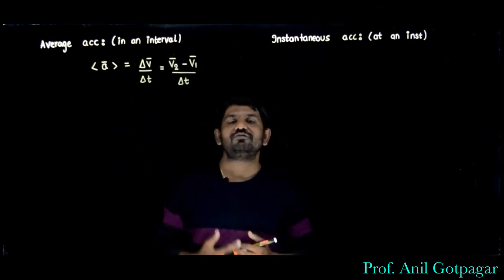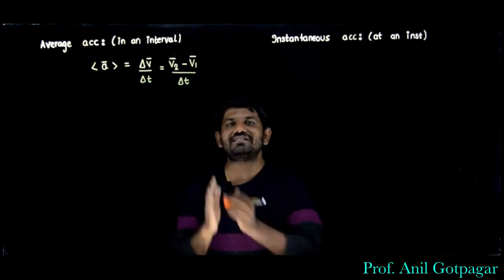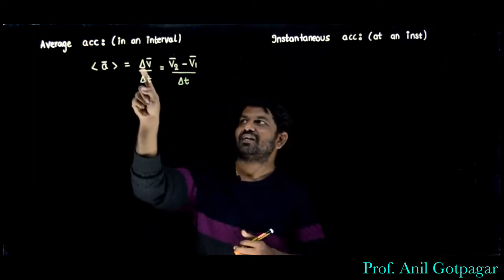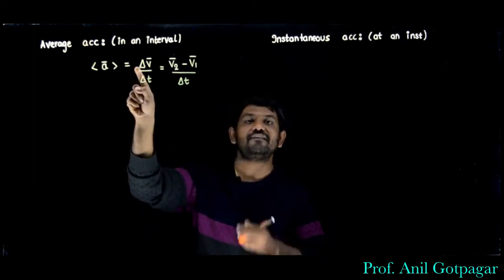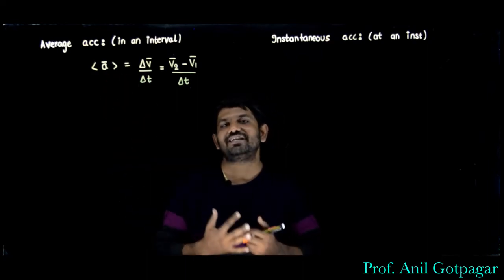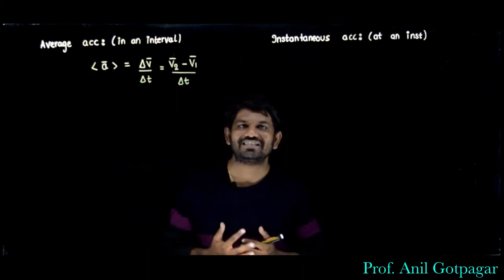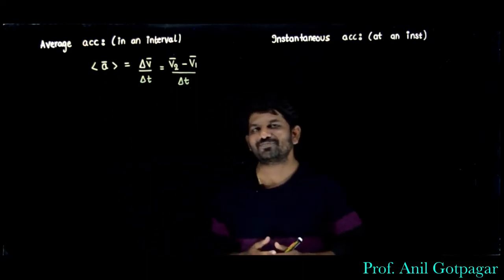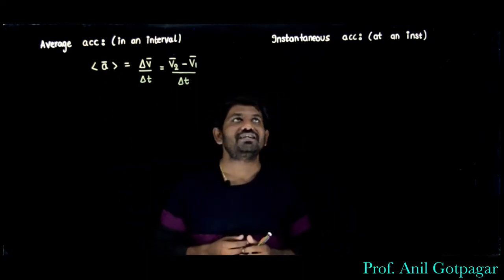We find the direction of change in velocity, that is delta v bar, and that will be the direction of average acceleration.